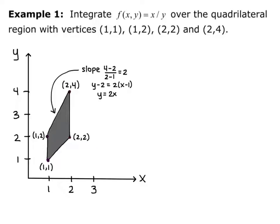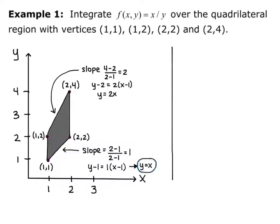Now I want to do the exact same thing for the lower bound of the quadrilateral region. I find the slope using the two points (2,2) and (1,1): slope equals (2 minus 1) over (2 minus 1), which equals 1. Plugging that into point-slope form gives y minus 1 equals 1 times (x minus 1), so y equals x. So I have a lower bound for y and an upper bound for y: x to 2x.